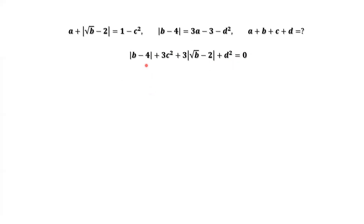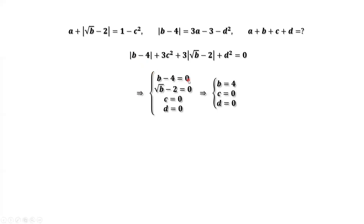This means each term on the left-hand side is 0. This implies b minus 4 equals 0, c equals 0, the square root of b minus 2 equals 0, and d equals 0. These results are consistent: b equals 4, c equals 0, and d equals 0.